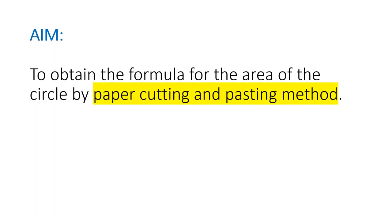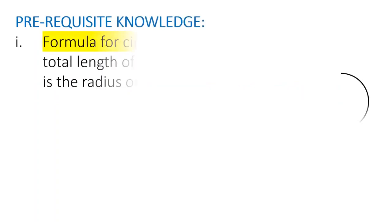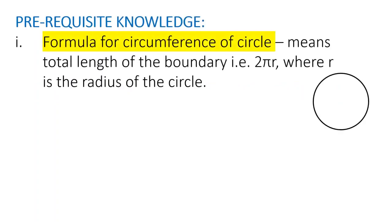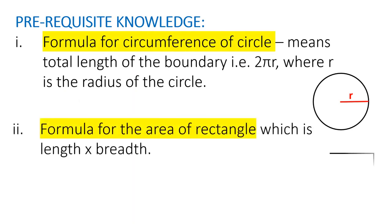For this activity we should have some prerequisite knowledge. First, formula for circumference of circle, the total length of the boundary, that is 2πr where r is the radius of the circle. Second, formula for the area of rectangle which is length into breadth.